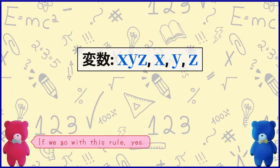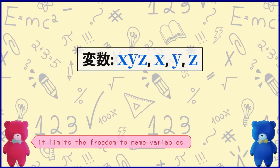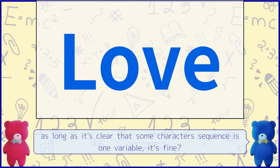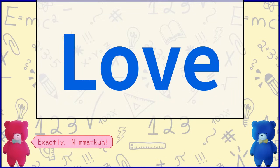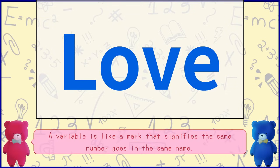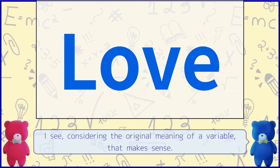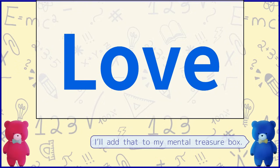If we go with this rule, it's troublesome — not just troublesome, but more fundamentally it limits the freedom to name variables. To summarise: as long as it's clear that some character sequence is one variable, it's fine. A variable is like a mark that signifies the same number goes in the same place. So as long as it's clear where the mark starts and ends, anything is fine. Considering the original meaning of a variable, that makes sense. Going back to the original meaning is very important.